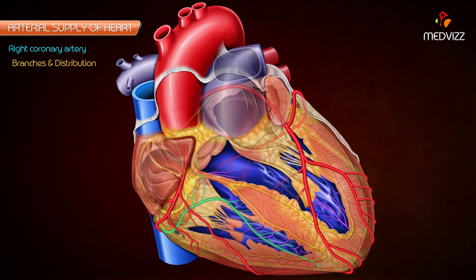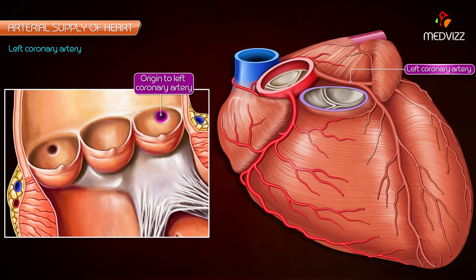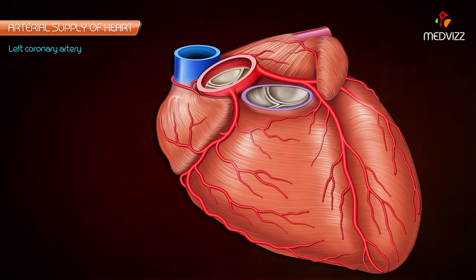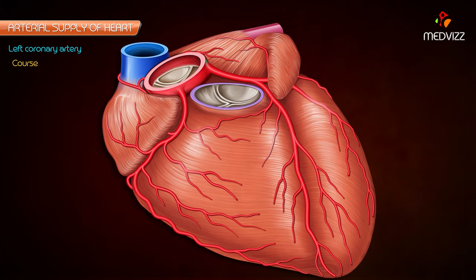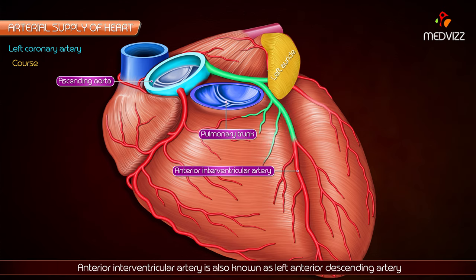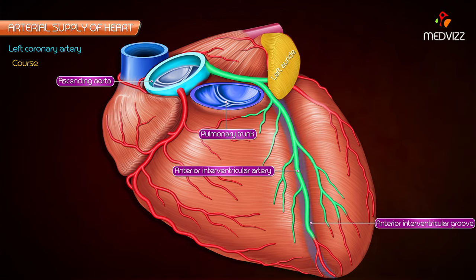Left coronary artery origin: the left coronary artery arises from the left posterior aortic sinus of the ascending aorta immediately above the aortic valve. After arising, it runs forwards and to the left between the pulmonary trunk and the left auricle, then divides into the anterior interventricular artery — also known as the left anterior descending artery — which runs downwards in the anterior interventricular groove to the apex of the heart.